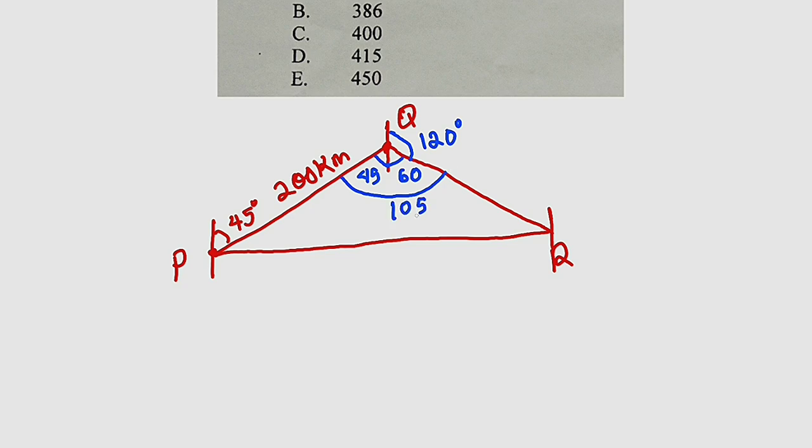And because from north to east is 90 degrees, it implies that this particular angle must be 45 degrees because 45, 45 is 90.